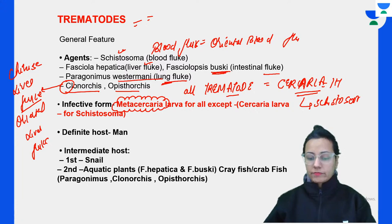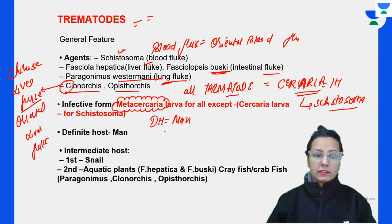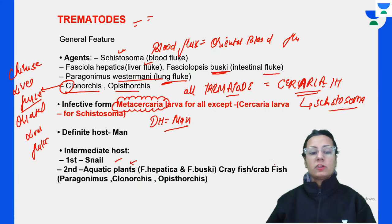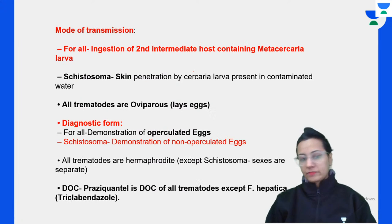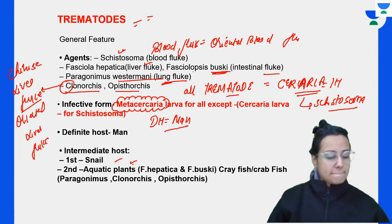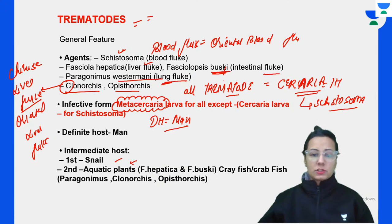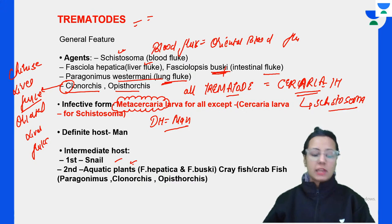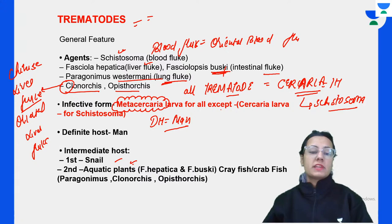The definitive host is man, and the intermediate host is the snail and aquatic plants for Fasciola hepatica and buski. For the crab or fish: that is for Paragonimus as well as Clonorchis sinensis and Opisthorchis. All trematodes have two intermediate hosts - one exception again is Schistosoma, which has only one intermediate host.